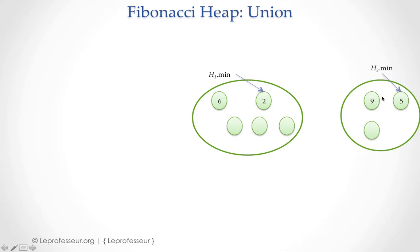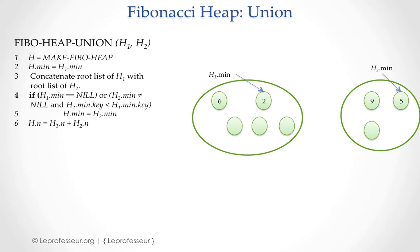In the same way, for H2 Fibonacci heap we have two nodes in the root list with key values 9 and 5. Node number 2 becomes the root node of H1 and we have pointer H1.min indicating that is the root of the first Fibonacci heap structure. In the same way we have a pointer H2.min to root number 5 indicating that node is the root node of the second Fibonacci heap.